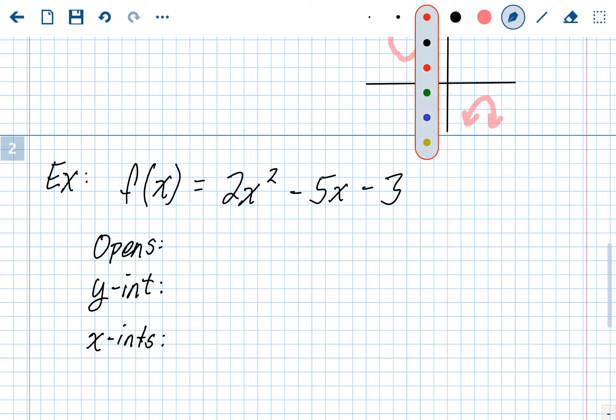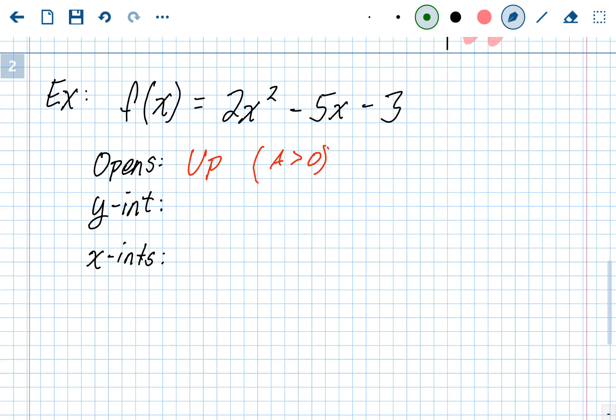Alright, the opening. Remember, the opening only depends on the a value. Our a value is 2, positive 2. So it means it's going to open up. Because the a value is greater than, it's positive, greater than 0. The y-intercept, recall from the last lesson, that the y-intercept is always the c value. So our y-intercept is going to be negative 3. Because c equals negative 3.